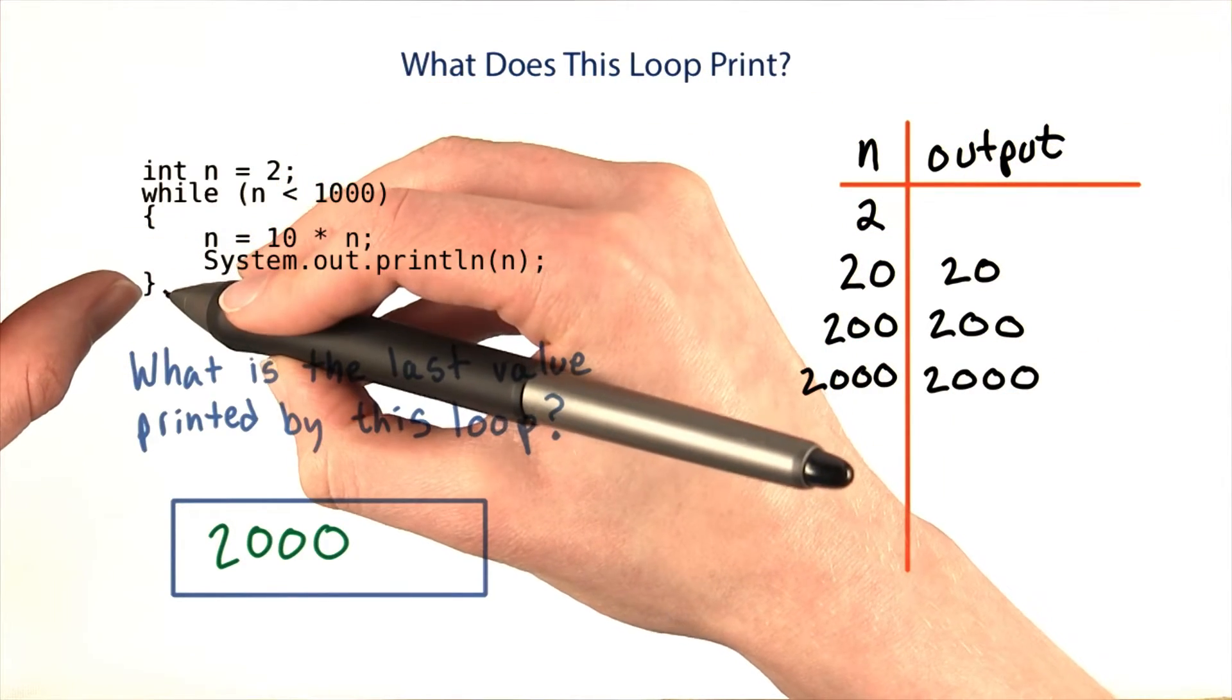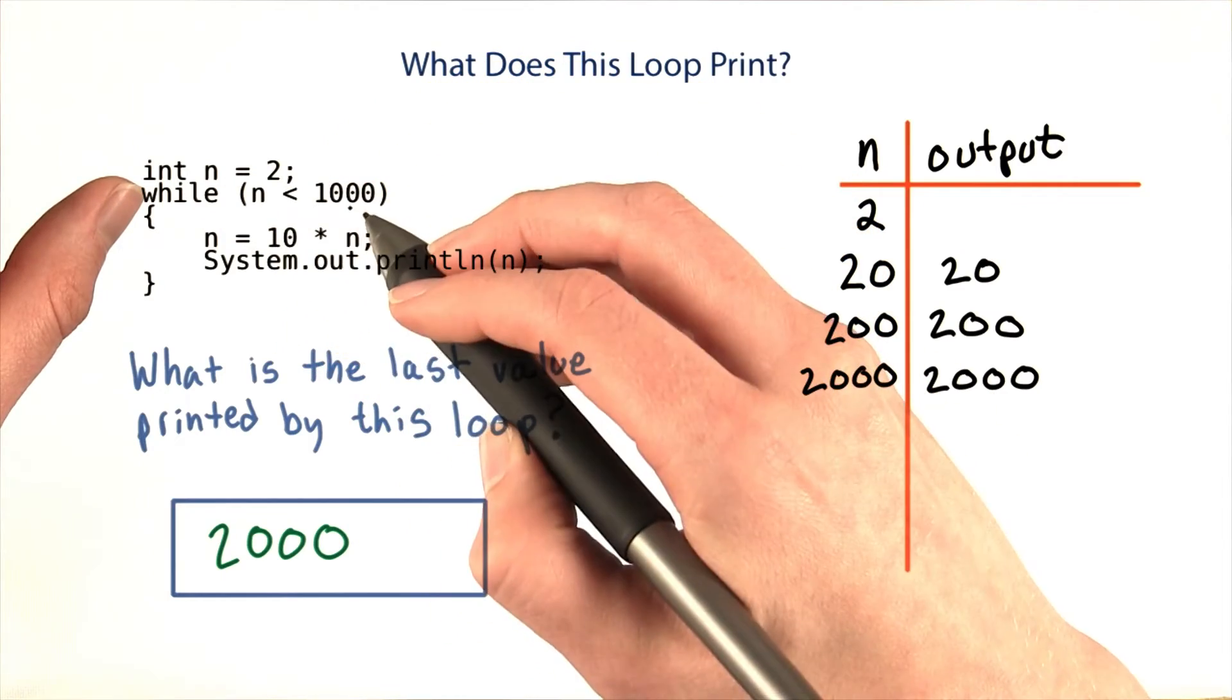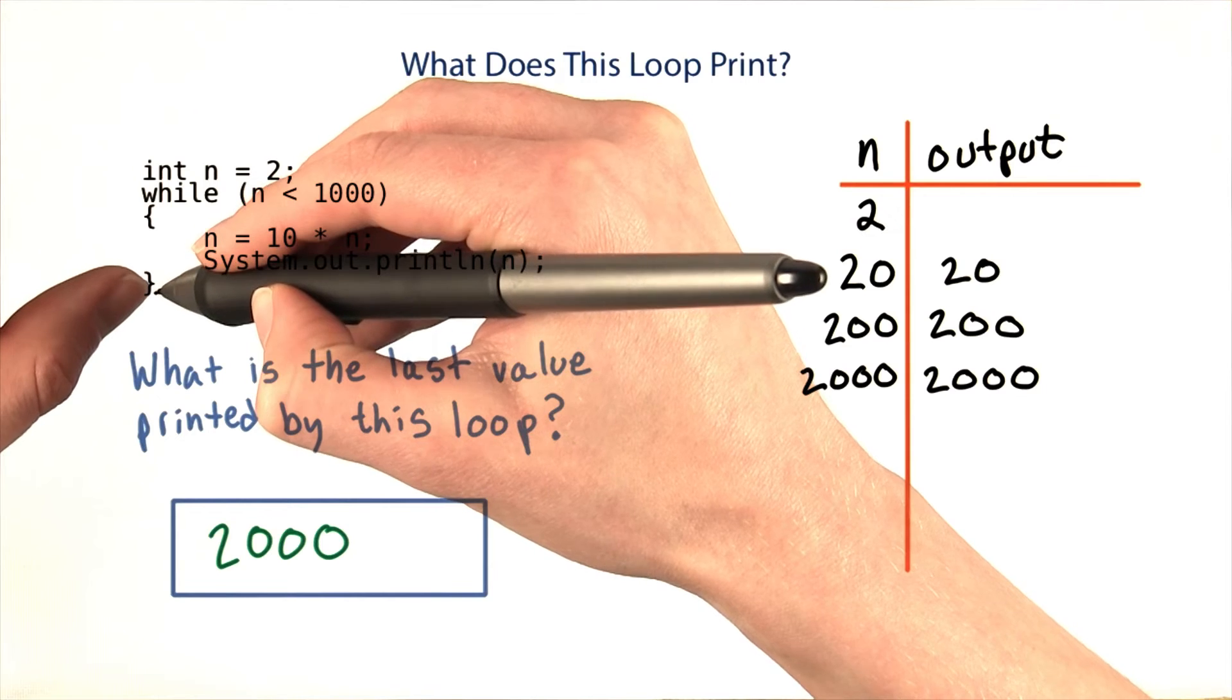And now I'm at the bottom of the loop, so I come back up and check the condition. 2,000 is less than 1,000 is no longer true, so I'm going to skip to the bottom and be done.